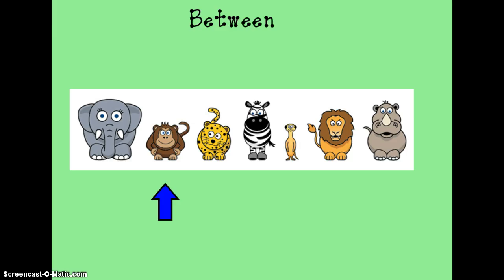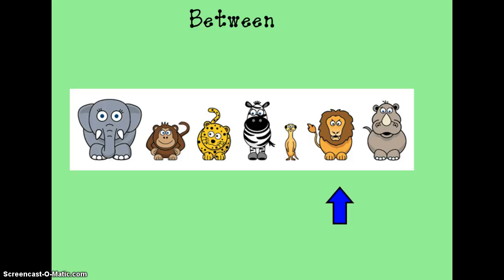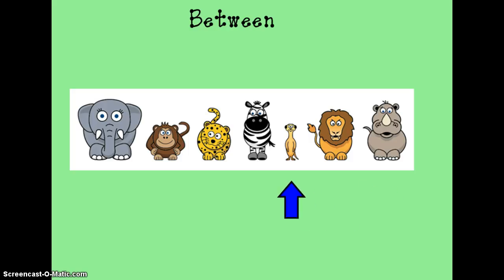Now let's look at the word between. When I'm talking about between, I'm talking about something that comes in the middle of two numbers, animals, or times of the day. In this slide, I have some different zoo animals. If you look at the monkey that the arrow is pointing to, I would say that the monkey is between the elephant and the cheetah because it is right in the middle of them. Can you tell me what the lion is between? When I talk about something being between, I'm talking about something that comes in the middle.